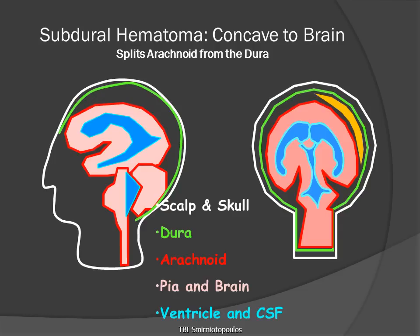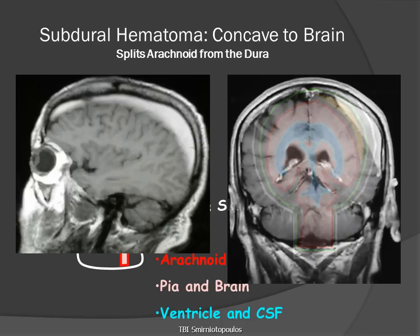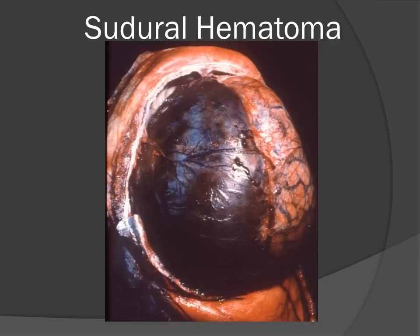A subdural hematoma is splitting the arachnoid from the dura. The actual location is therefore under the dura, but over the underlying arachnoid membrane. Subdural hematomas cross the sutures and will wrap around the cerebral hemisphere following the arachnoid as it surrounds the brain.